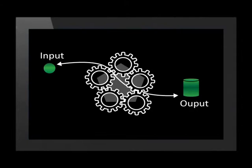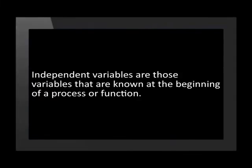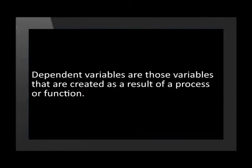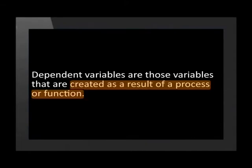Exactly what does this mean? Functions are very much like machines. An input value goes into the machine through a process and becomes an output value. Input variables are also called independent variables, and output variables are also called dependent variables. Independent variables are those variables that are known at the beginning of a process or function. Dependent variables are those variables that are created as a result of a process or function.